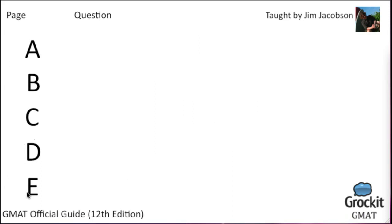Last one — page 508, question number 76: Because no employee wants to be associated with bad news in the eyes of a superior, information about serious problems at lower levels is progressively softened and distorted as it goes up each step in the management hierarchy. The chief executive is therefore less well informed about problems at lower levels than are his or her subordinates at those levels. The conclusion drawn above is based on the assumption that...